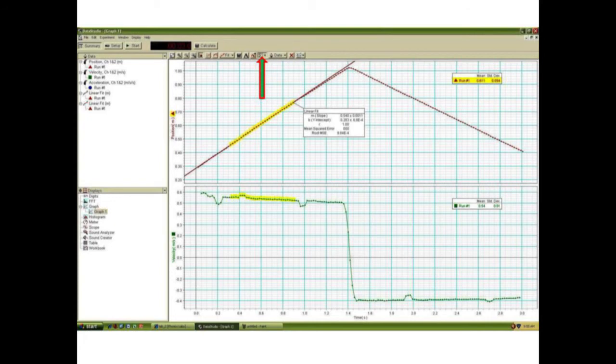Both the slope of the linear fit of position and the mean of velocity data should be similar. By comparing the error in slope with the standard deviation from the velocity mean, you can determine which approach is more accurate.